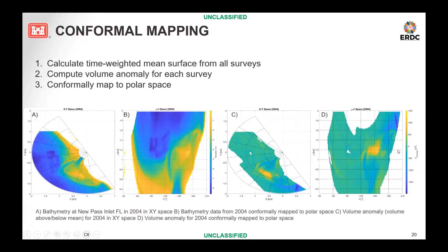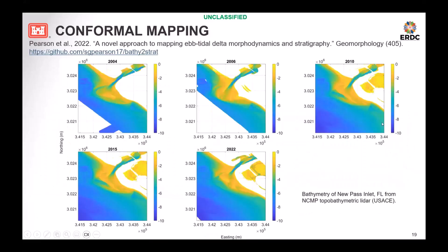As a reminder, for New Pass we have several different bathymetric surfaces: 2004, 2006, 2010, 2015, and 2022. The conformal mapping analysis is a workflow developed by Pearson et al. 2022 — GitHub access to this code is at the top of the slide. Basically this is a workflow to identify and track complex geomorphic features and their movement through time and space for an inlet, which would normally require numerical modeling.